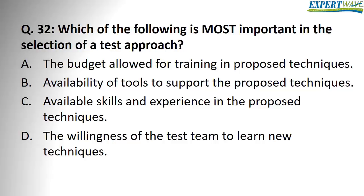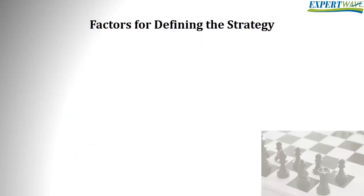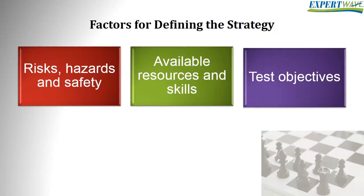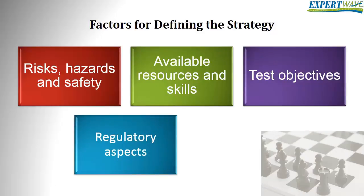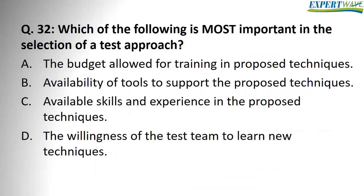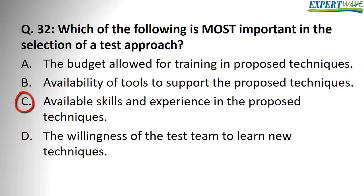Question 32: which of the following is most important in the selection of a test approach? We choose a test strategy as part of test planning, and according to your choice, you can adapt accordingly. Does budget matter? No — you can ask for the budget needed. Does tools matter? No — you can buy the tools needed. Does willingness of the team to learn matter? No. Does available skills and experience matter? Yes — because if something is not available, there is nothing you can do about it. For example, if you need a performance testing subject matter expert and there is no one available, then you must choose a different strategy. So the correct answer is C.